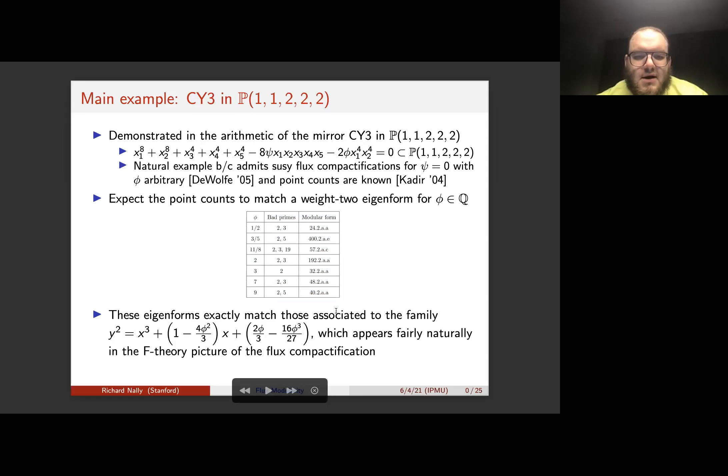And so it's sort of interesting—weight-two eigenforms, in addition to being associated to supersymmetric flux compactifications, are also associated to elliptic curves defined over the rationals.